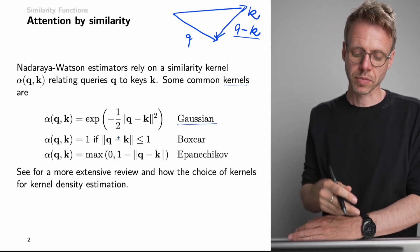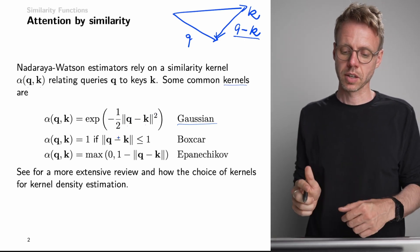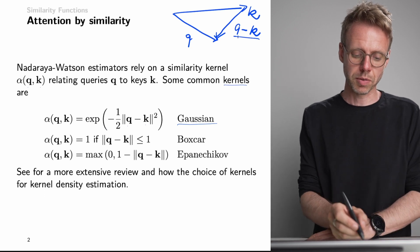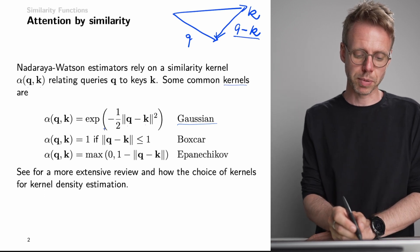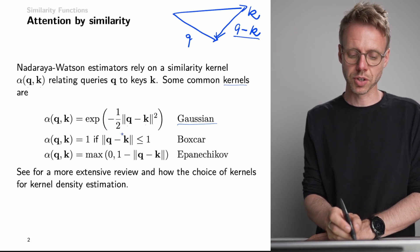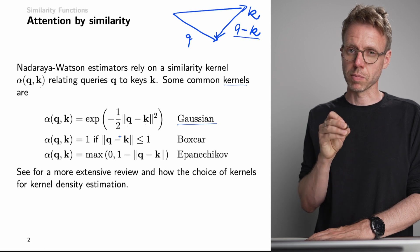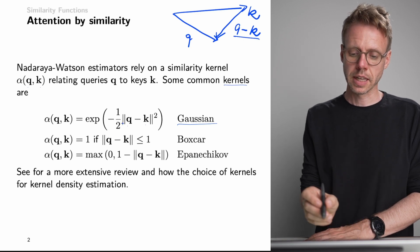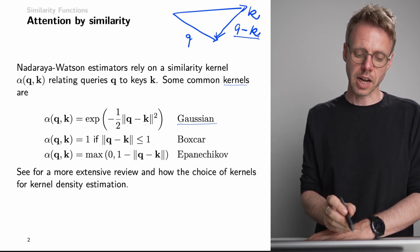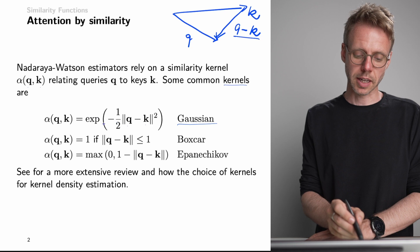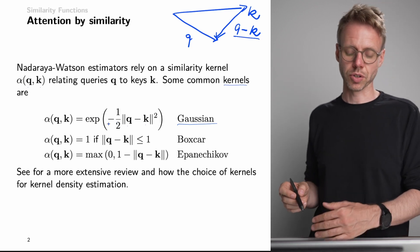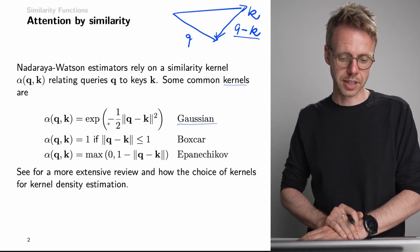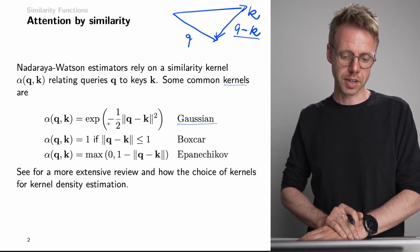We take this norm, square it, and multiply it by minus one-half. That means that if this is close to zero, we take the exponential function of a small negative number. And if this is large, we take the exponential function of a large negative number.